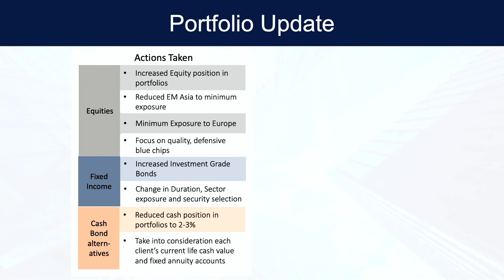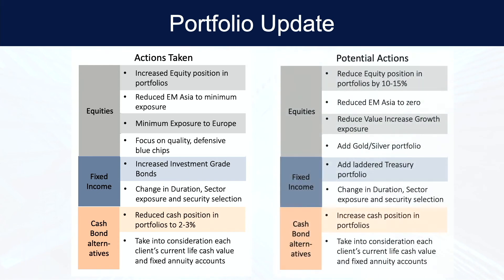Let's look specifically at the actions we've taken so far and what we could possibly be doing in the future — this really comes down to what the market is doing and what the economic indicators are telling us. Some options we have: we could again reduce equity positions in the portfolios by 10 to 15 percent; we could reduce emerging markets and Asia to zero — that might end up happening. Right now we're pretty heavily in value stocks, but if we hit that turnaround, growth stocks are going to be performing better, so we'll be watching that.